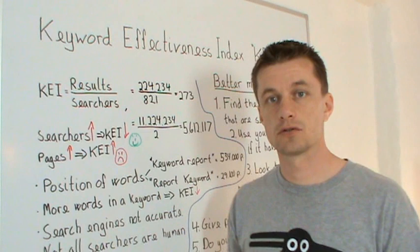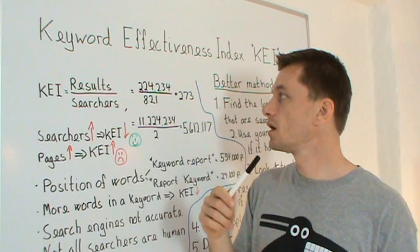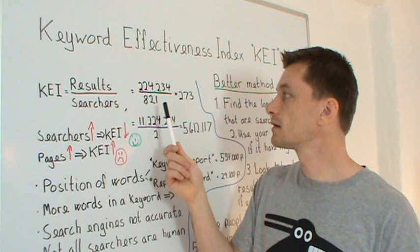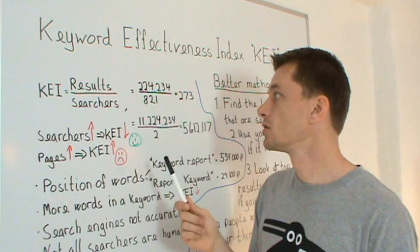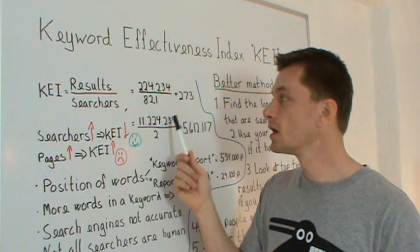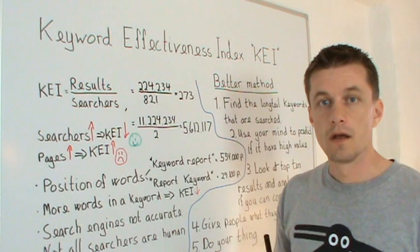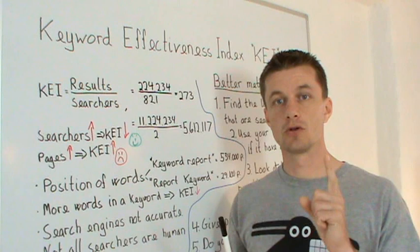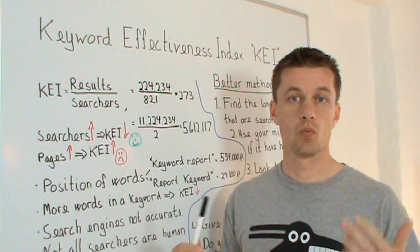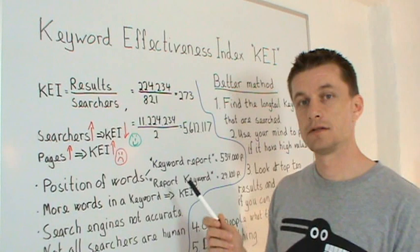They will give you this information. So let's try an example. Let's say you search for something and you have 224,000 pages in the index and you find there are 821 searches. You take the 225,000 and divide it by 821 and you get 273. That means that for every one searcher there are 273 pages competing, which is basically what the KEI index is saying.